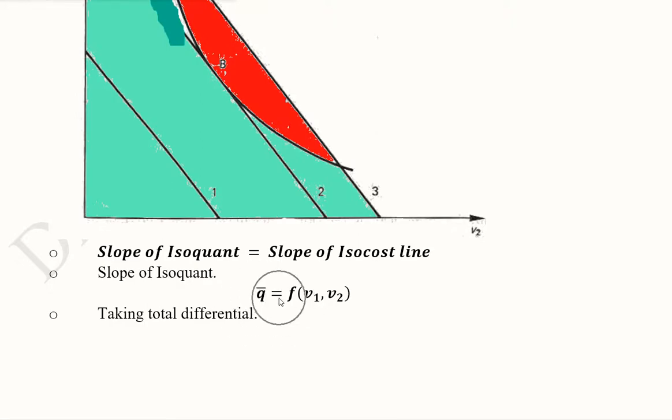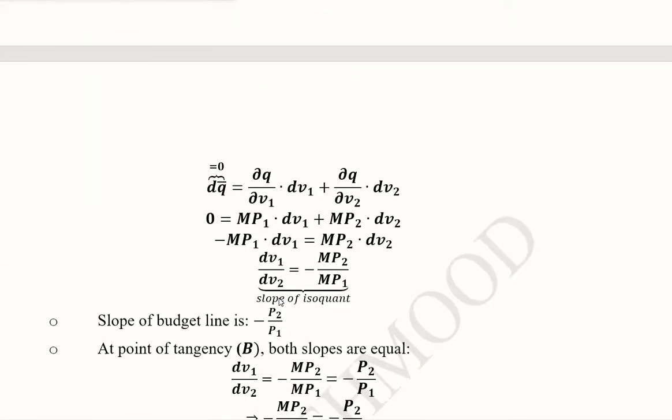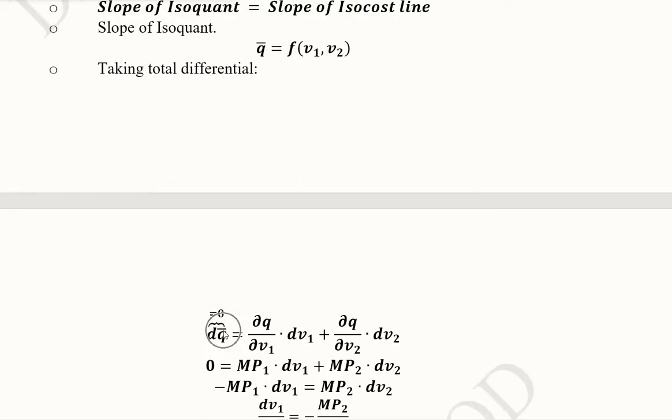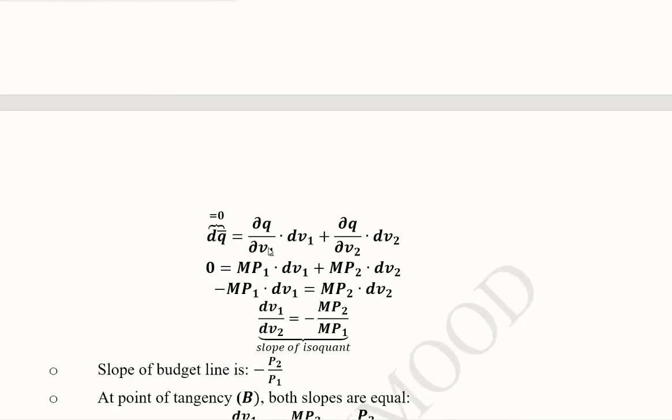Now we take the total differential of this function. On the left hand side, since this is a fixed value, Q bar, its differential will be equal to 0. So in the next step we have written 0. On the other side we have to take the partial derivative of the dependent variable Q with respect to the independent variable V1, and we multiply this derivative with the differential of the first independent variable V1.